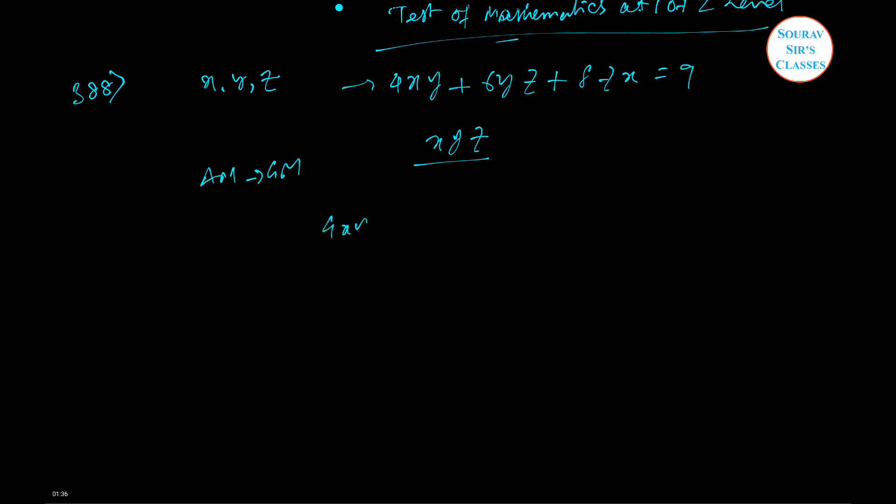The sum of 4XY plus 6YZ plus 8ZX divided by 3 is greater than or equal to the cube root of 4XY times 6YZ times 8ZX. That is AM-GM inequality. If you just recalculate the structure you will get it. This can be represented by 9 on the left side, and the RHS is X squared Y squared Z squared, which is simply XYZ whole cube.